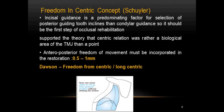We have already discussed the freedom from centric concept by Dawson, also called long centric, in session 3. What is the difference between freedom from centric and freedom in centric? Dawson's long centric concept was primarily based on anterior teeth — it is the freedom of the mandible to move into centric relation or slightly anterior to it without bumping onto any inclines. Whereas in Schuller's freedom in centric concept, he proposed an anterior-posterior freedom of movement of around 0.5 to 1 mm, based on the theory that centric relation was not just a point but a biological area of the TMJ.